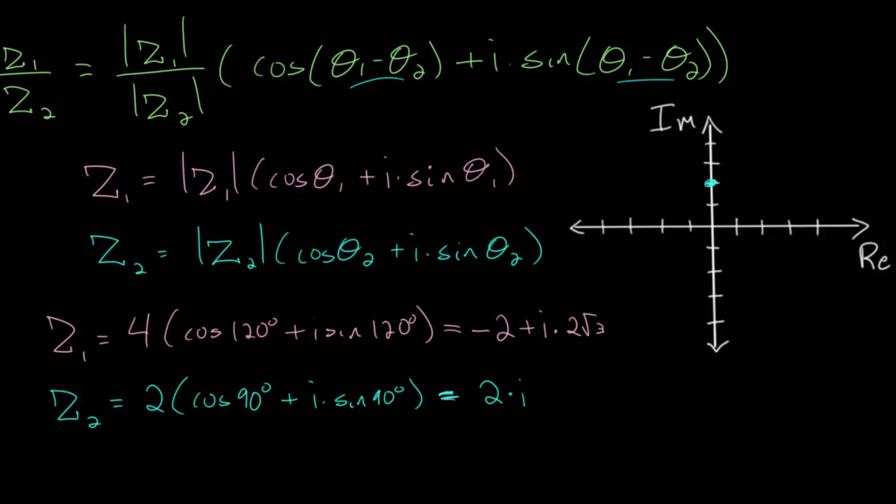Let's also plot z1. It has a magnitude of 4. It is a distance of 4 away from the origin, and it's at an angle of 120 degrees, so it should be roughly right about here. And of course, this point right here would have a magnitude of 2, an angle of 90, but this is z2.